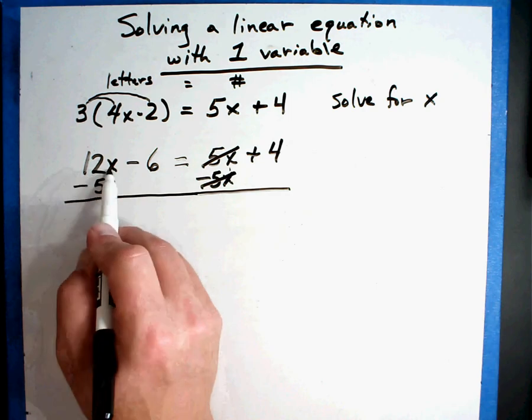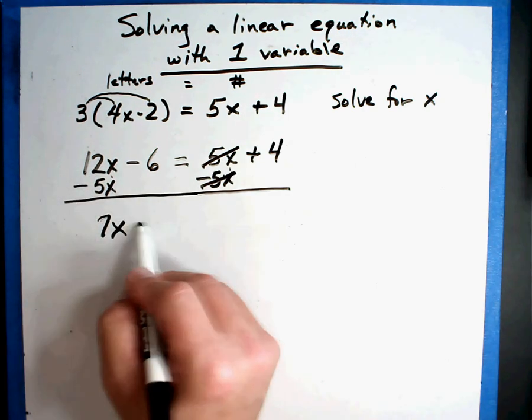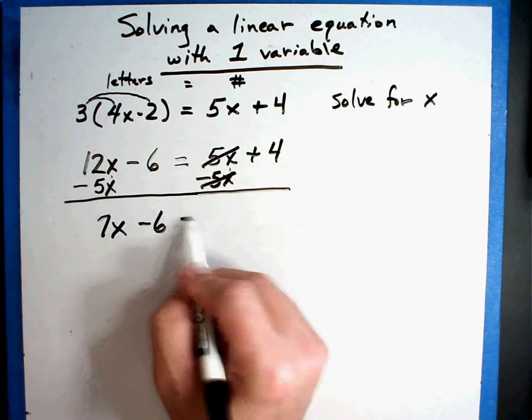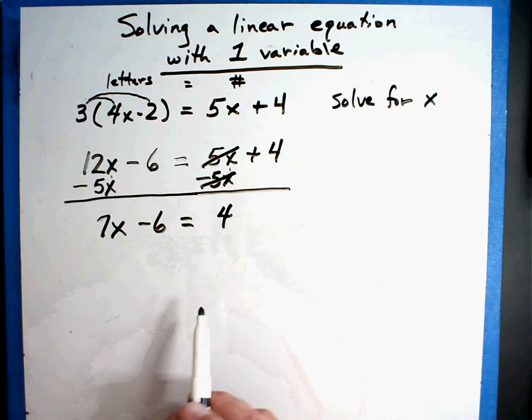So 12X minus 5X is 7X. I still have a minus 6 equals positive 4. And so I have it together.